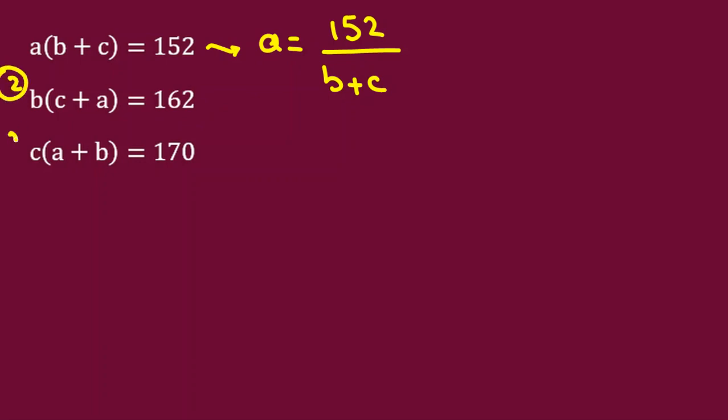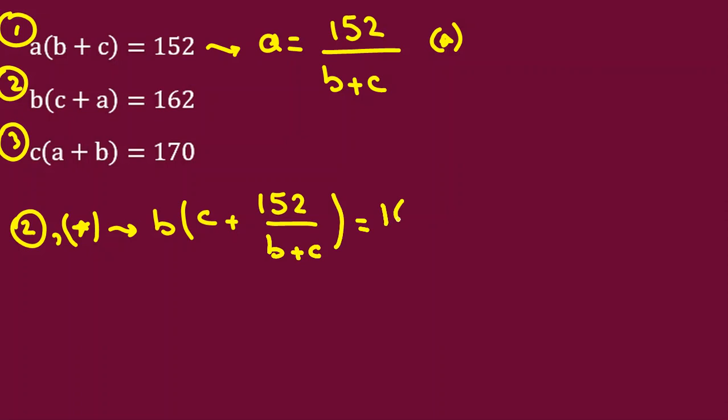Let me consider this is two, it is three, it is one, and let me call this one star. If I consider second equation and star, then I can conclude b(c+a), instead of a you can write 152 over b+c equal to 162. And if I use third equation and star again, it will be c times a is what, 152 over b+c plus b equal to 170.